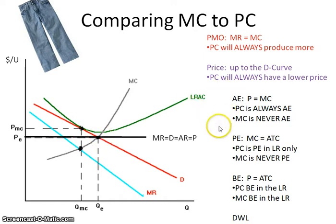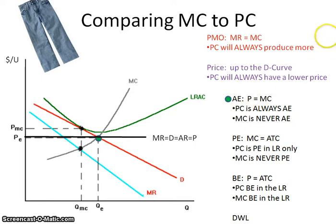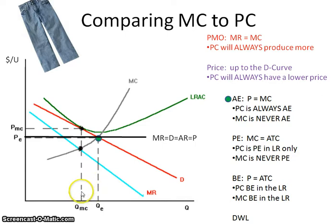When we get into our formulas, allocative efficiency means producing that right mix of goods. The formula for allocative efficiency is price equals marginal cost. Looking at the graph, you can see the perfectly competitive firm is always allocatively efficient. The monopolistically competitive is never allocatively efficient — it's the closest to allocative efficiency of any of the imperfect firms, but they just don't produce enough to achieve that right mix of goods.